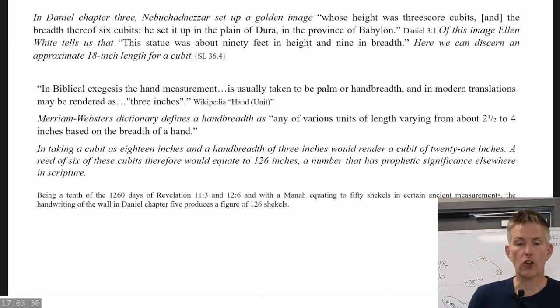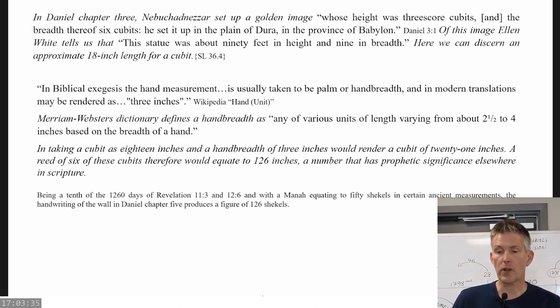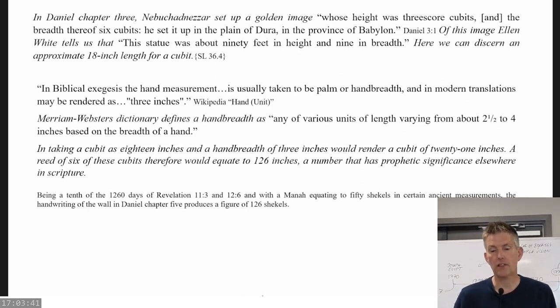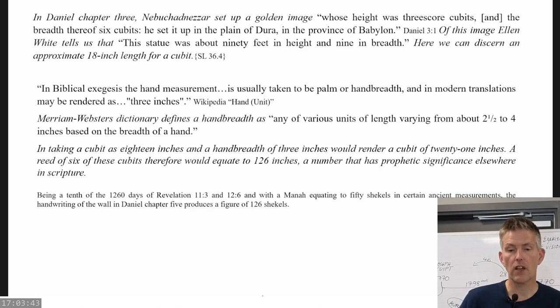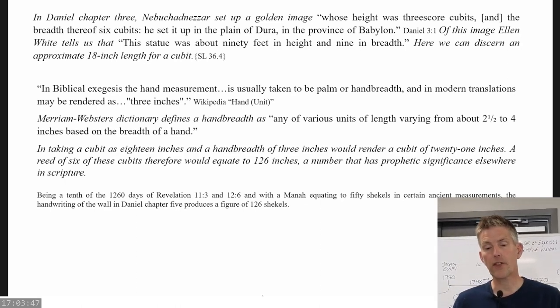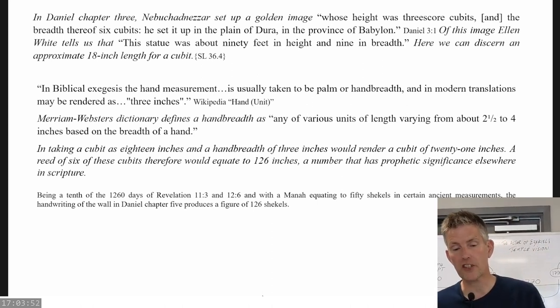Then in Daniel chapter 3, Nebuchadnezzar set up a golden image, whose height was three score cubits, and the breadth, six cubits. He set it up in the plain of Dura in the province of Babylon. So Ellen White says of this image, the statue was about 90 feet in height and nine in breadth. So here we can discern an approximate 18-inch length for a cubit.